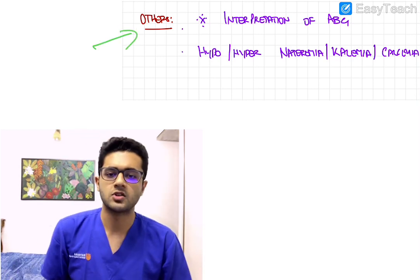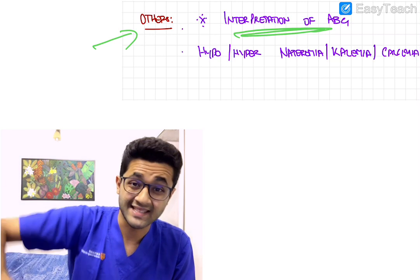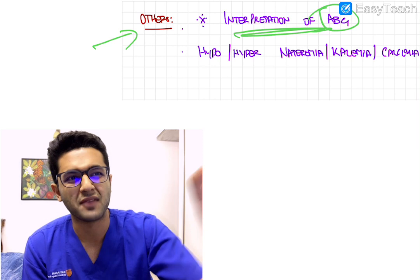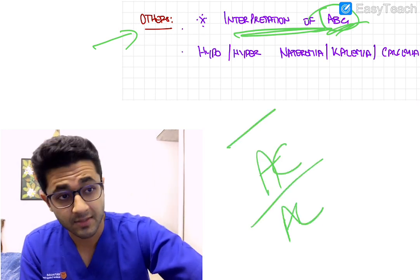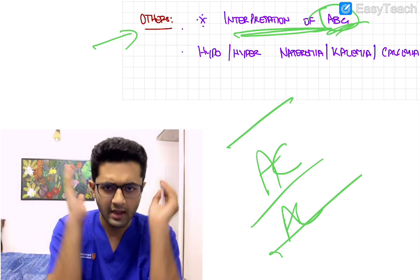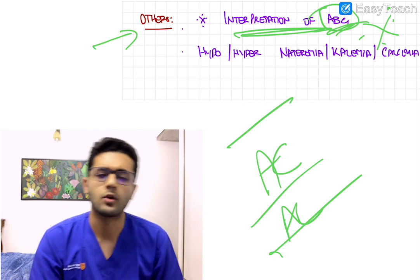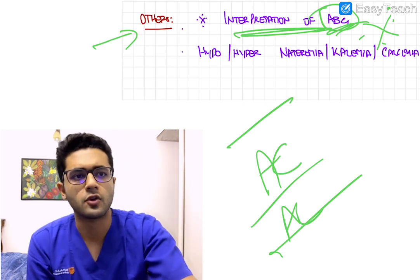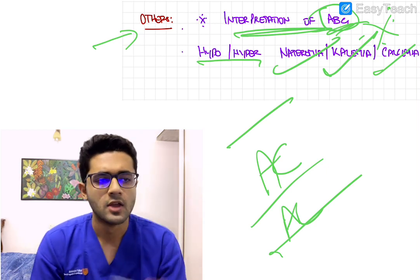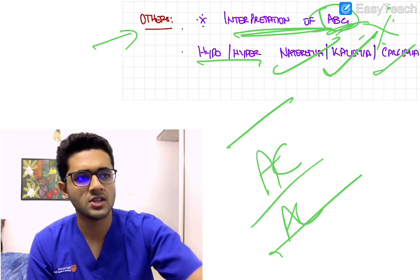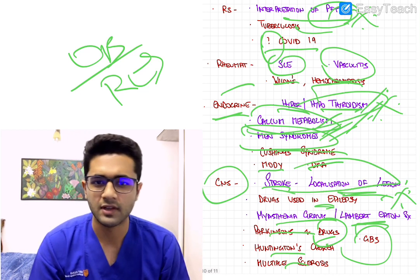Under 'others' — these are very important topics not always identified by students. ABG interpretation is getting very important. Questions on metabolic acidosis, metabolic alkalosis, respiratory acidosis, and respiratory alkalosis — differentiating these — will be asked. There will be at least one question from ABG; it's a hundred percent sure. Studying this assures you marks and it's not that difficult. ABG interpretation is something you should not miss.